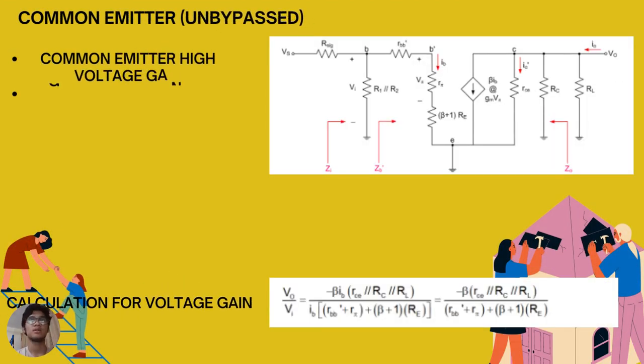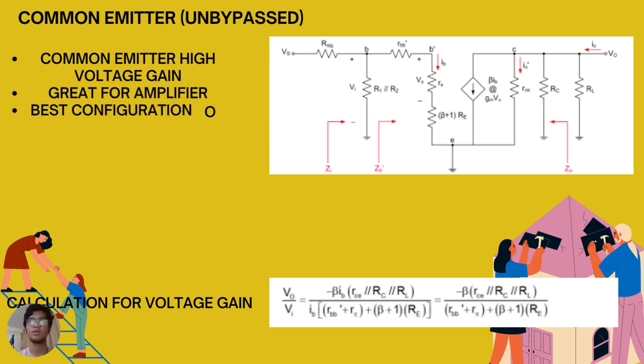As observed, the best configuration for an amplifier is common emitter. The common emitter amplifier circuit shown in the diagram is commonly called voltage divider biasing. This type of biasing arrangement uses two resistors as a potential divider network across the supply with their center point supplying the required base bias voltage to the transistor.